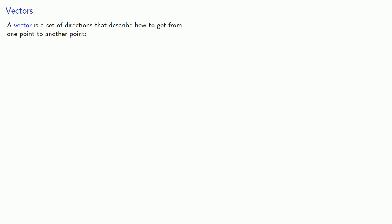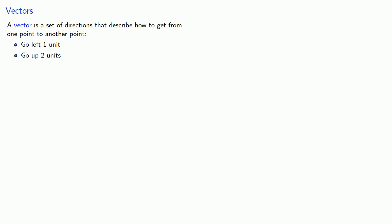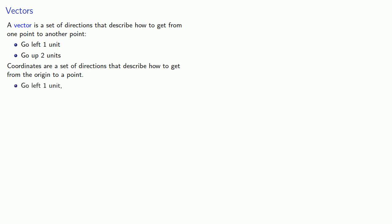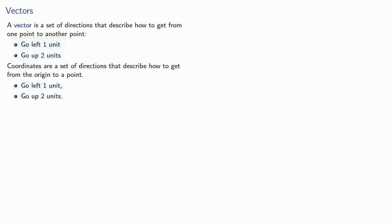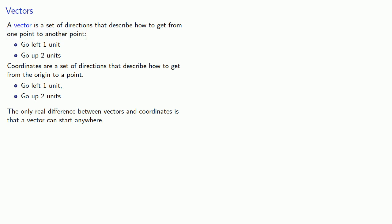This leads us to an important concept. A vector is a set of directions that describe how to get from one point to another point — for example, go left 1 unit, go up 2 units. It's helpful to compare these with coordinates. Coordinates are a set of directions that describe how to get from the origin to a point. As you can see, there's not a lot of difference between the idea of a vector and a coordinate. Really, a vector is a generalization of the idea of a coordinate — in a coordinate, our starting point is always the origin, while in a vector, we can start anywhere.